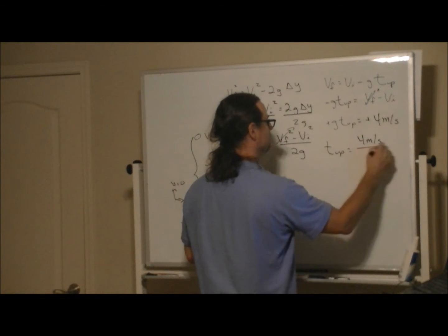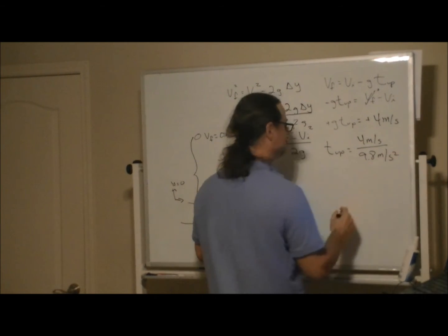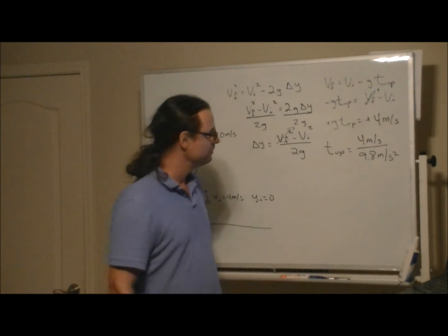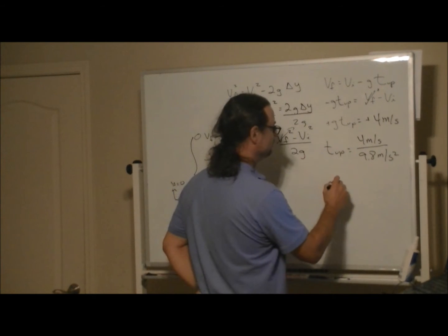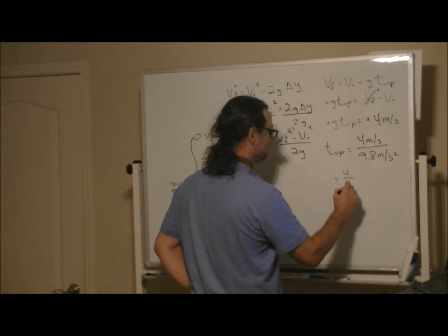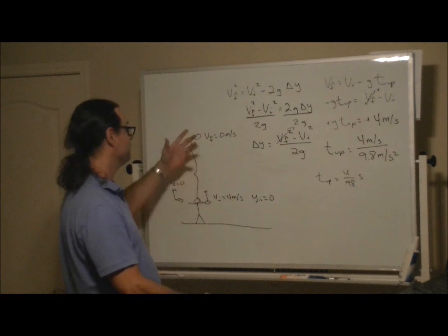When you look at the units carefully, meters per second divided by meters per second squared is seconds. So I'll just leave it as 4 divided by 9.8 seconds for t up, and then you just have to find out how far up it went in that process.